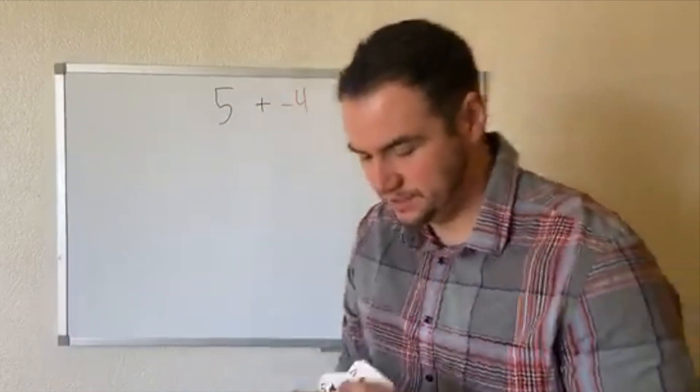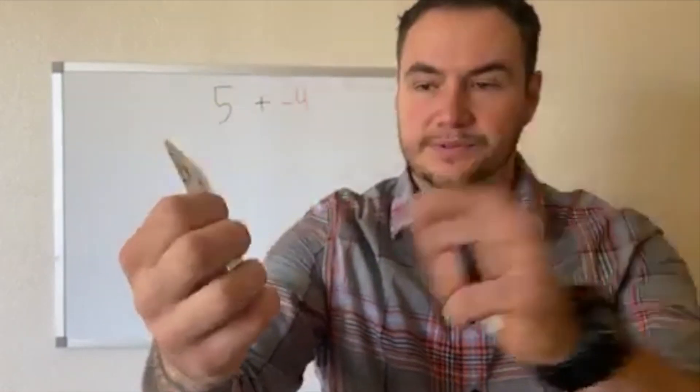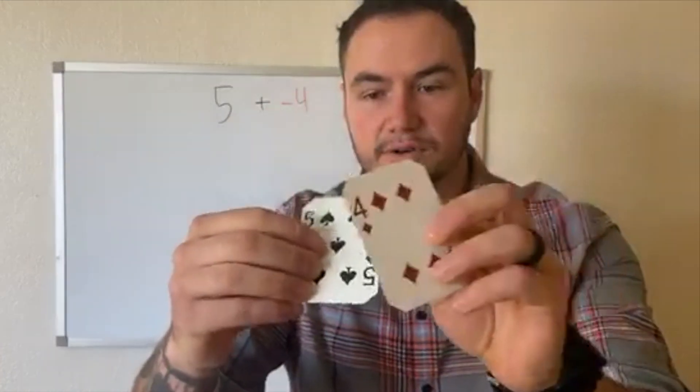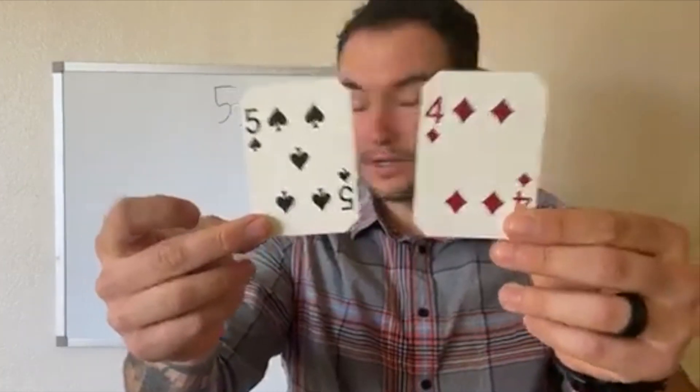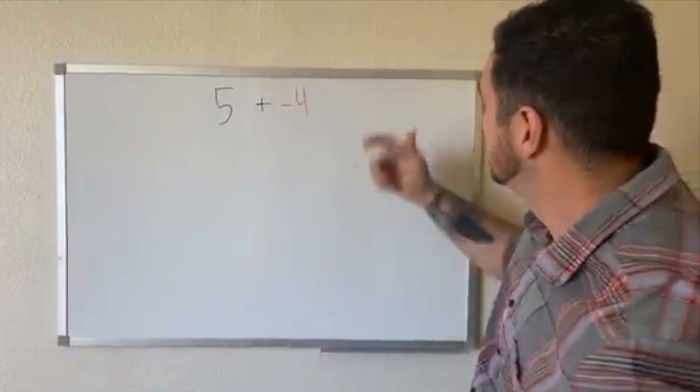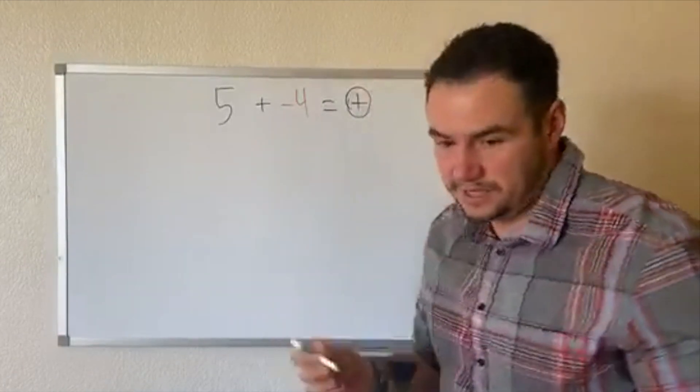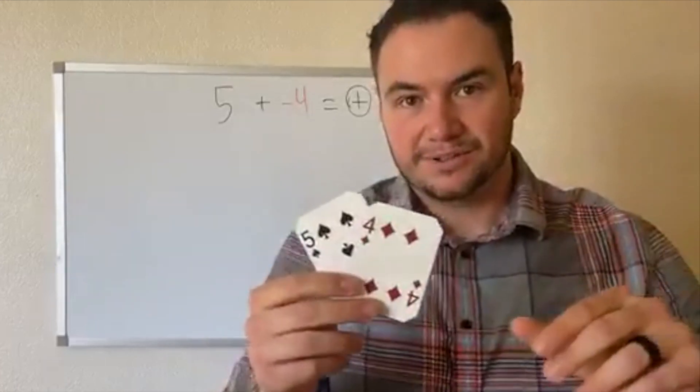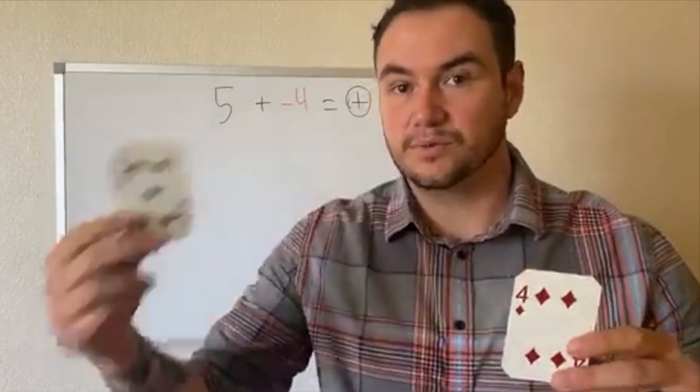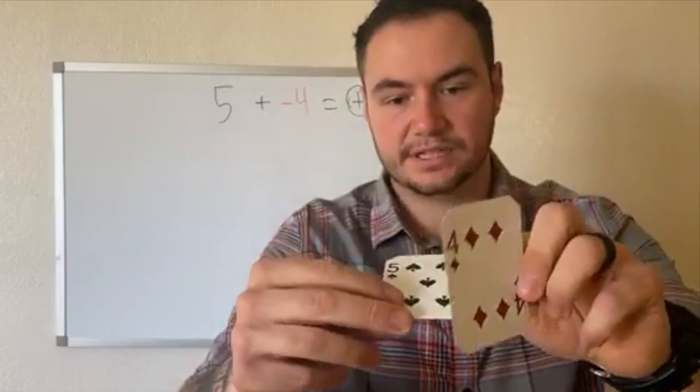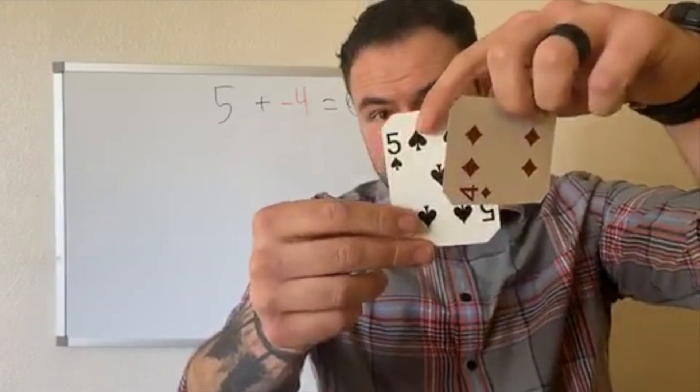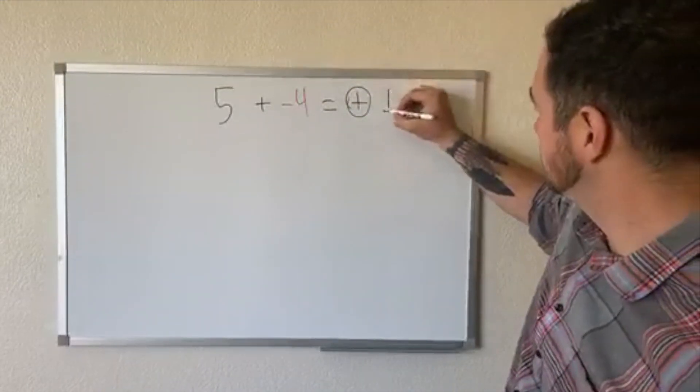And the cool thing about playing cards is they actually have the number of shapes on them. So you can say five is one, two, three, four, five, and four is going to be one, two, three, four. So you're going to take these four away from this five. And which one's going to win? Which one's bigger? So you can clearly see here that the five has more shapes than the four. So you know that the answer is going to be positive. You don't know what the answer is yet because you haven't done the subtraction, but you know it's going to be positive because you know that the number, the larger number, whether it be positive or negative, is always going to win in the addition problem. So which one's bigger here? Five. So therefore it's positive. We take four away from five. So you take one, two, three, four. How many are left? Just the one. So it's going to be positive one.